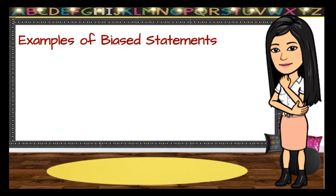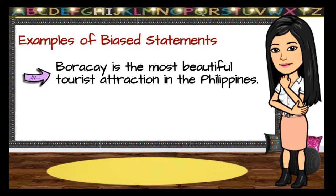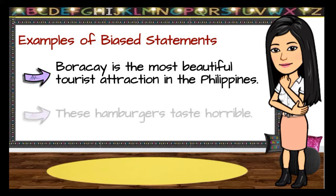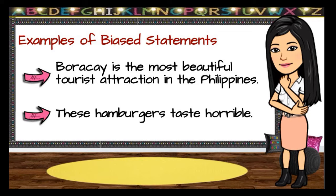Here are some examples of biased statements. First, 'Baraka is the most beautiful tourist attraction in the Philippines.' This is a biased statement because it is based only on the speaker's opinion and is not backed up by any evidence. The speaker may be someone who loves beaches more than any other attractions, or maybe a resident of Baraka who advertises the place. The next example is, 'These hamburgers taste horrible.' This biased statement was made by someone who doesn't like the taste of one or more of the ingredients in the hamburger. It is a personal opinion, not an objective statement based on neutral evidence.